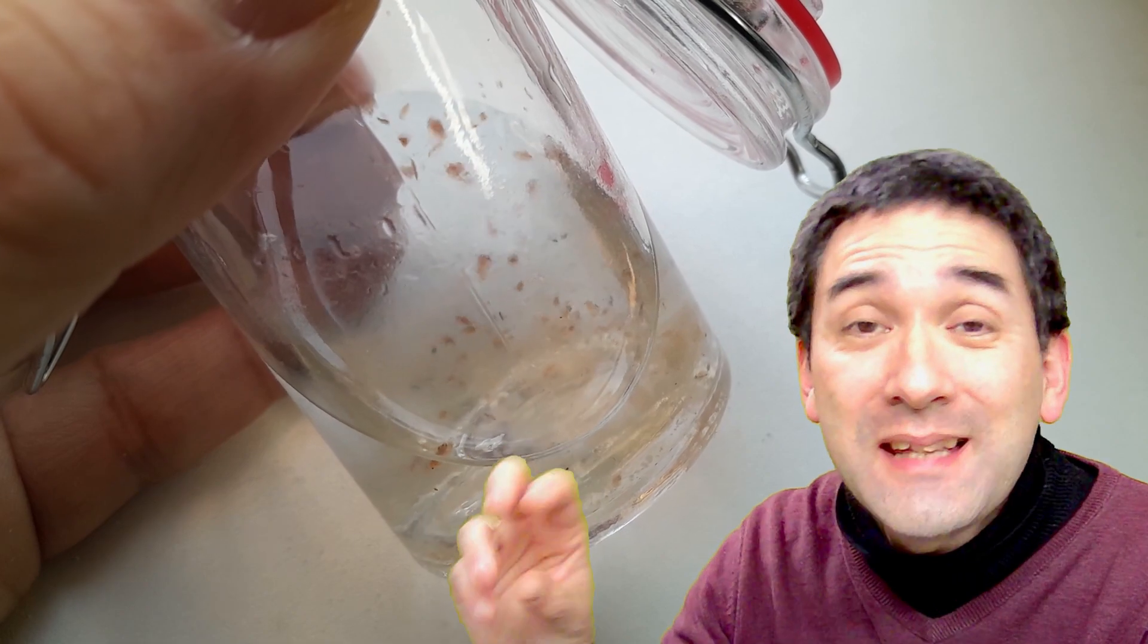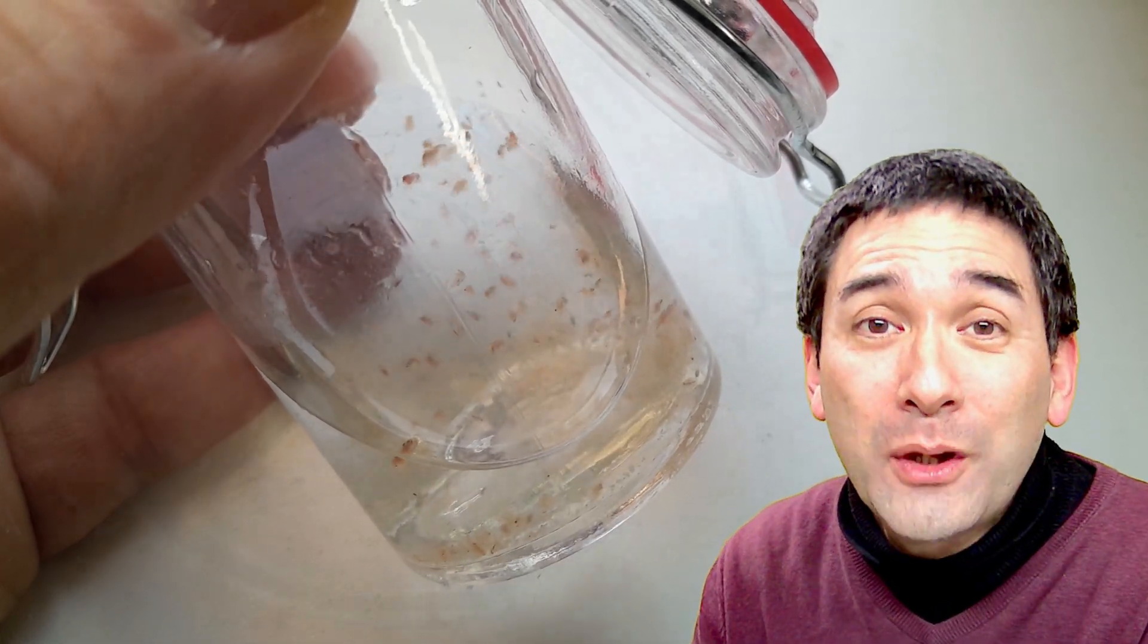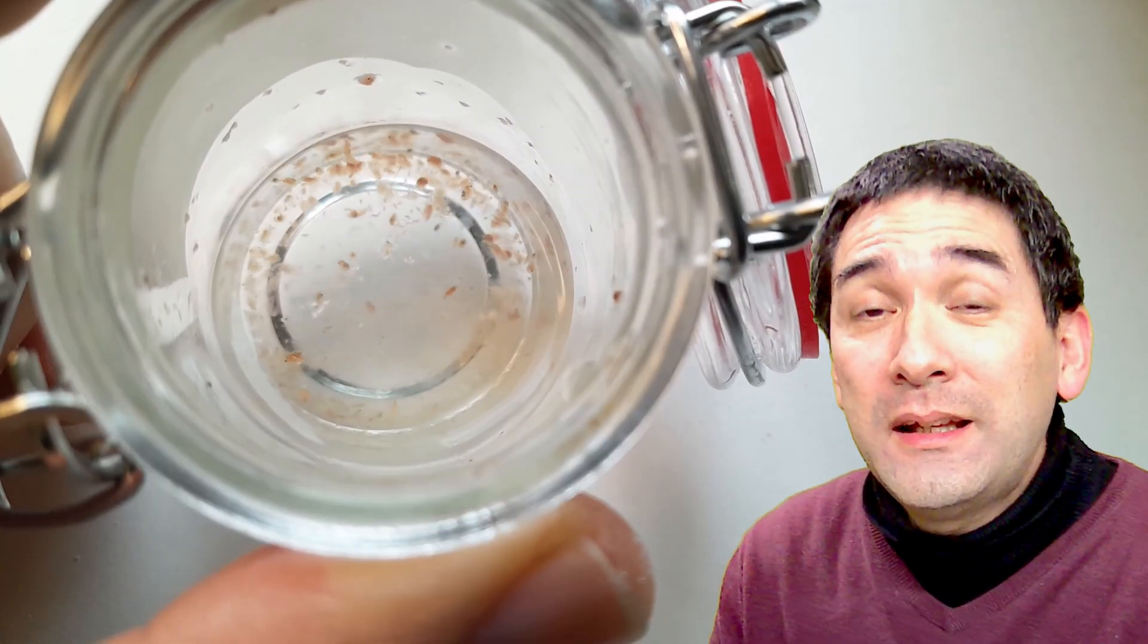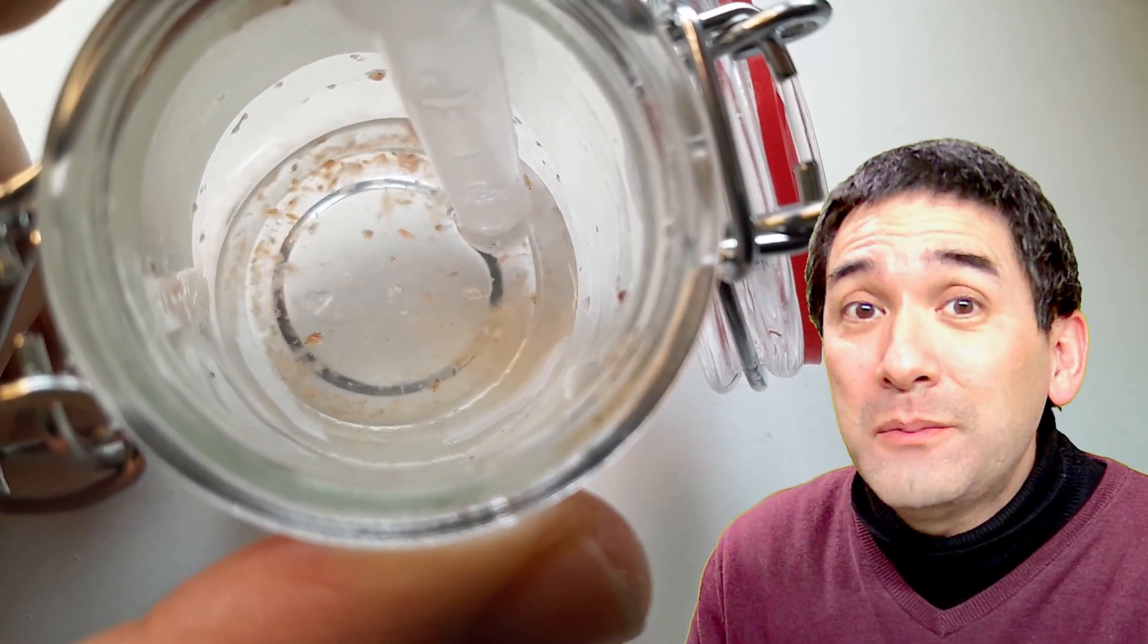I was able to see some eggs and some tiny little water fleas in there as well, and I decided to simply put them on the microscope slide and add a little bit of alcohol to those water fleas to see how their behavior changes.